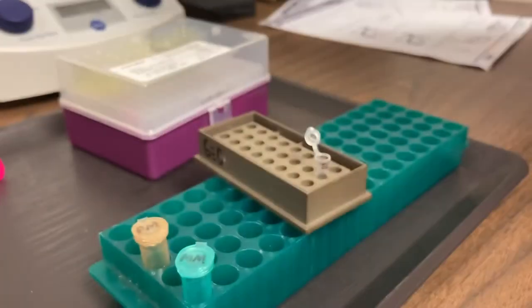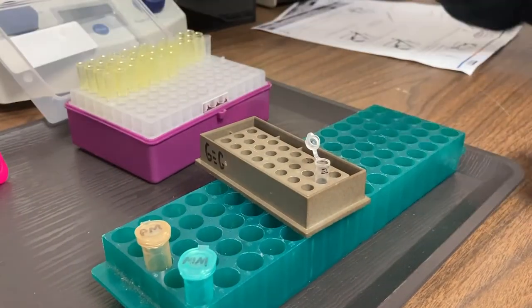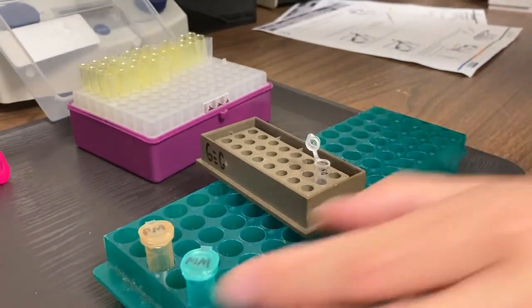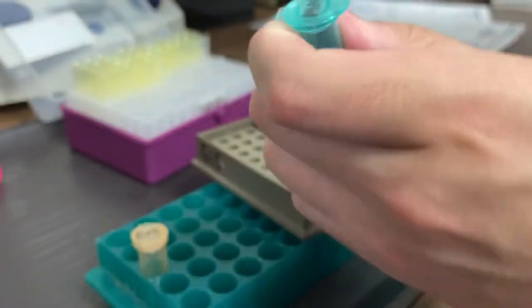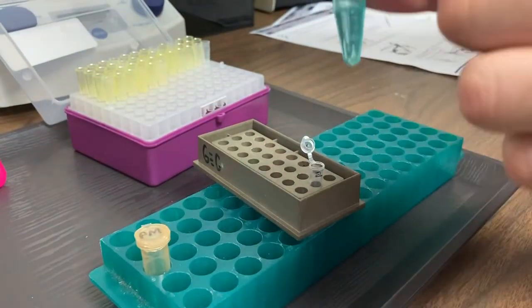Next, we'll set up our PCR reactions. First, we'll set the volume of our micropipet to 20 microliters, and we'll add our master mix to our PCR tubes.